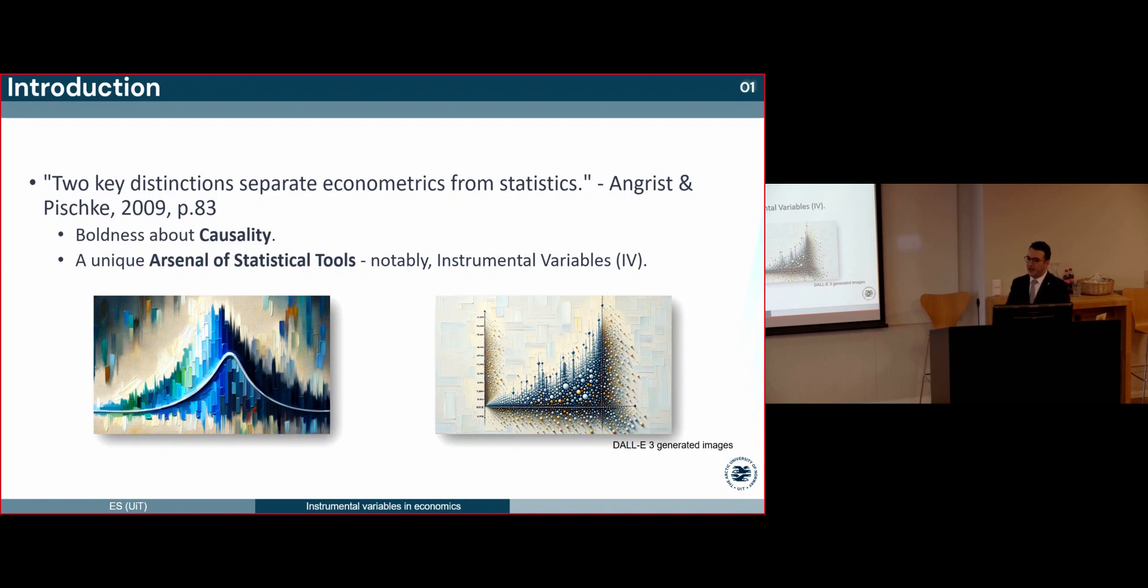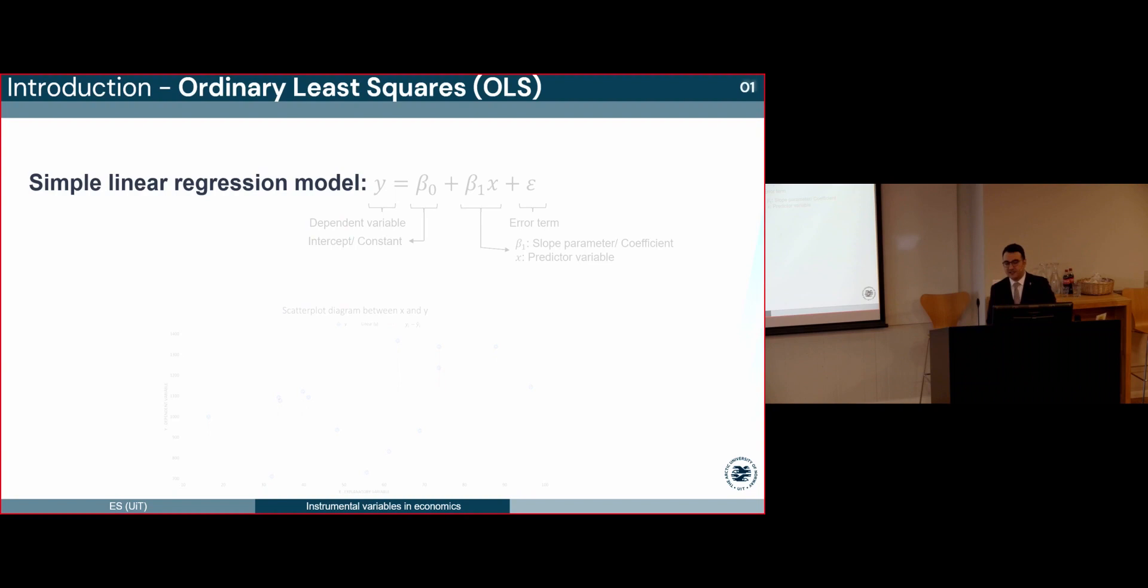As we delve into econometrics, it's vital to highlight its uniqueness. Angris and Pinschke point out two distinctions between econometrics and statistics. First, econometrics confidently tackles causality, challenging the conventional hesitance of statisticians. Secondly, econometrics boosts special tools with the instrumental variables method being paramount. Today, we will explore how IV offers insight into complex systems and beyond.